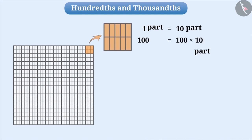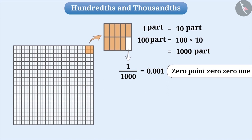One part contains 10 parts. So, 100 parts contain 100 into 10, which is equal to 1000 parts. If we take one part from these 1000 parts, then that part will become one-thousandth part of the whole square. We will express it like this and we read it as 0.001. Therefore, the third place to the right of the decimal point is one-thousandth.